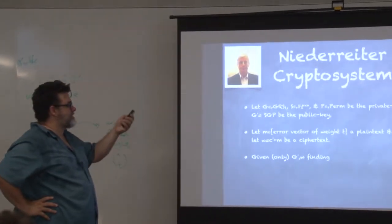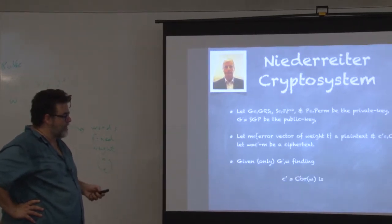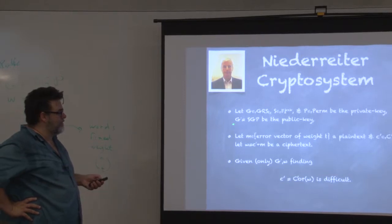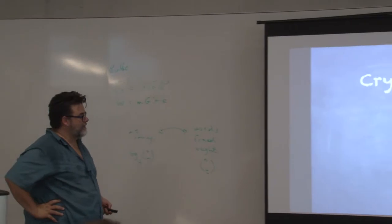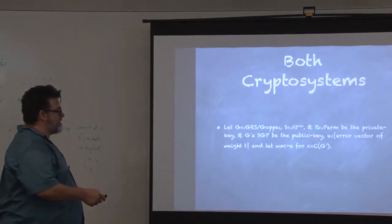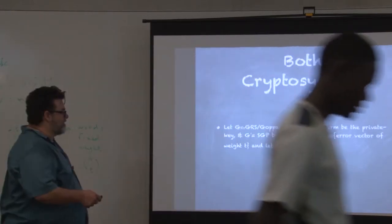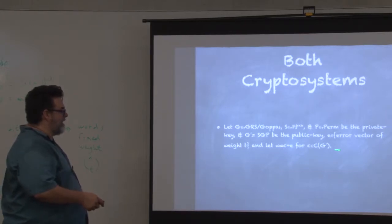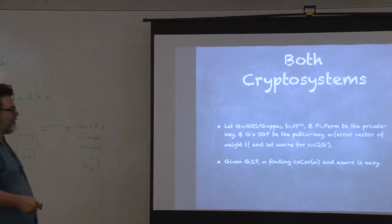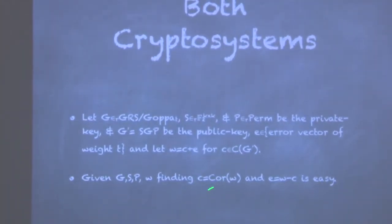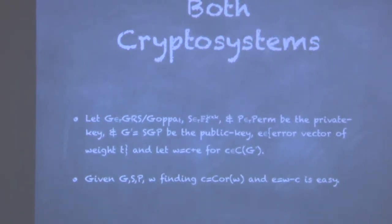In the Niederreiter system we make essentially the same assumption as in McEliece: recovering the codeword nearest to W is a difficult problem if you don't know the structure hidden inside G prime. For both cryptosystems, G, S, and P form the private key, G prime is the public key, and we have errors of a certain weight. The word W becomes the ciphertext, which is a codeword plus E. For both of them, finding the codeword nearest to W is easy if you have an error correction procedure for G.